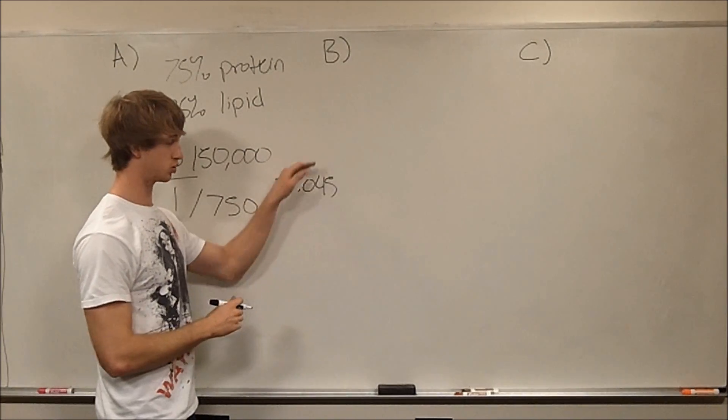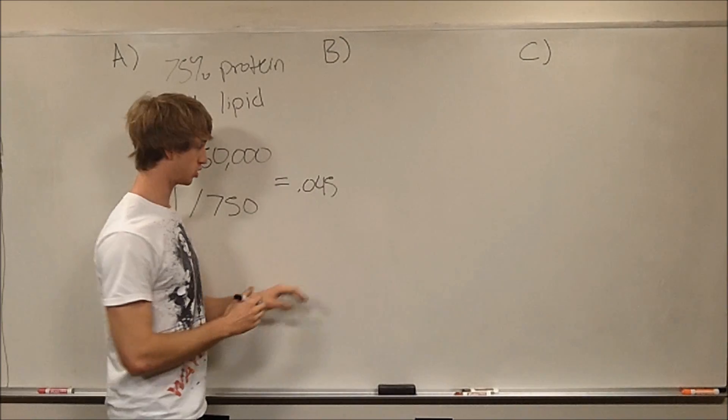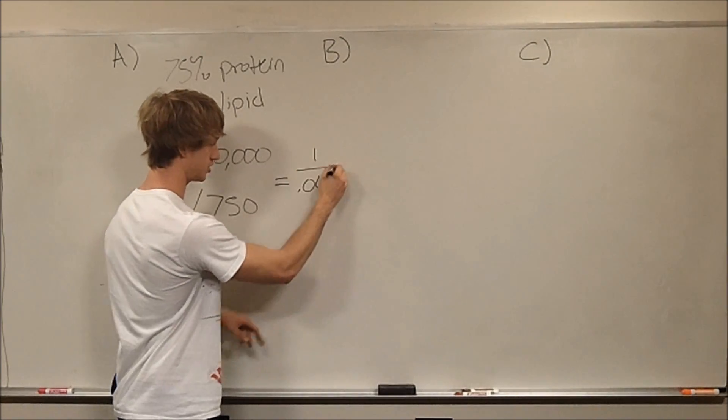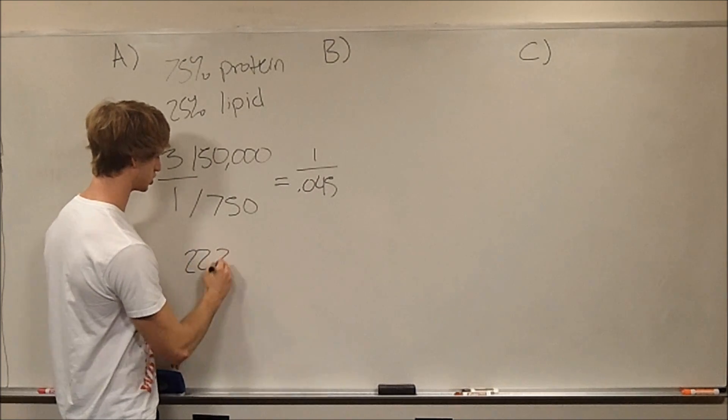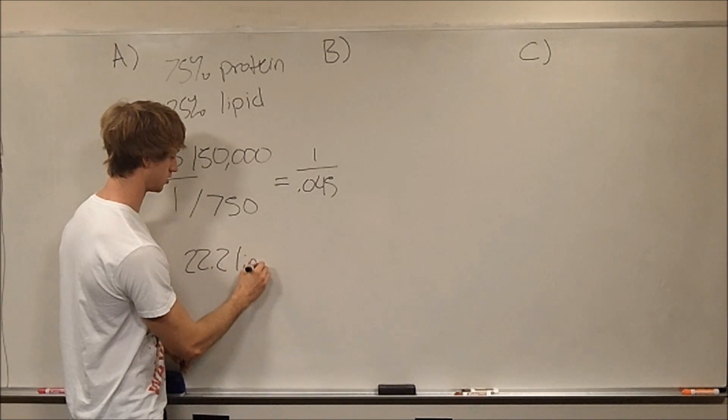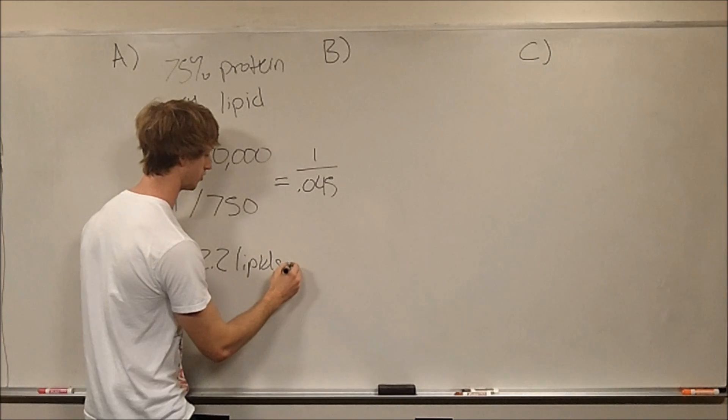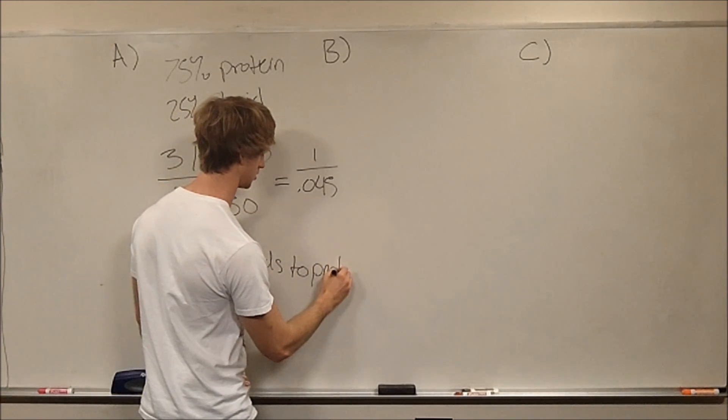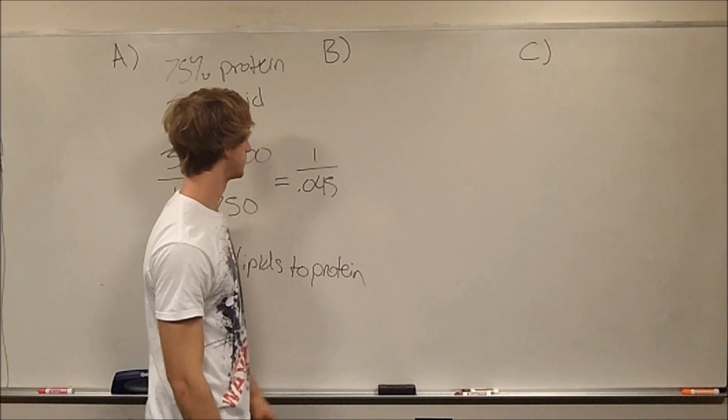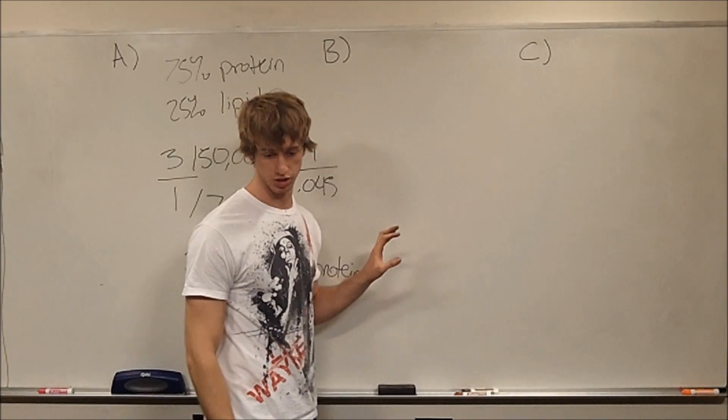You take the inverse of this, so this is protein to lipids. We want to get lipids to proteins. Just do 1 divided by this number, and we get about 22.2 lipids per protein, for every protein. Alright, so this is the first part of the question. The second question.